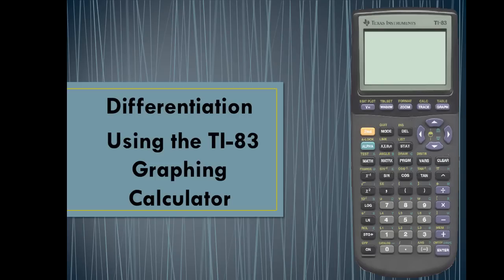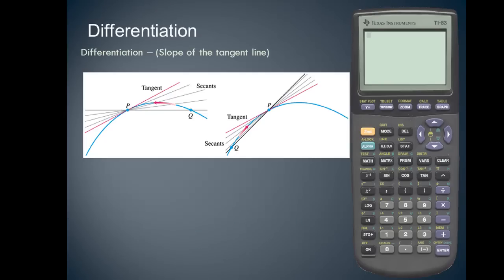Differentiation using the TI-83 graphing calculator. Differentiation is defined as the slope of the tangent line.